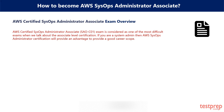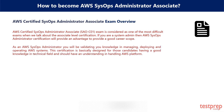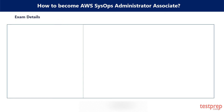If you are a system admin, then AWS SysOps Administrator Associate will provide an advantage and a good career scope. As an AWS SysOps Administrator, you will be validating new knowledge and managing, deploying, and operating AWS systems. This certification is basically designed for candidates with good knowledge in the technical field and an understanding of handling the AWS platform. Get the basic exam details from the table below.